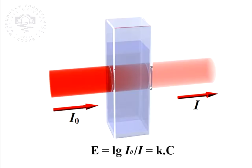A decimal logarithm of the ratio of the two intensities is called extinction, absorbance, or optical density of the solution. The extinction is directly proportional to the concentration of the substance in the sample.